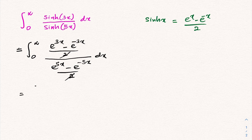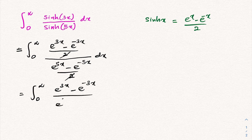So we have the integral from 0 to infinity of (e^(3x) minus e^(-3x)) over (e^(5x) minus e^(-5x)) dx. Now we have another interesting integral.